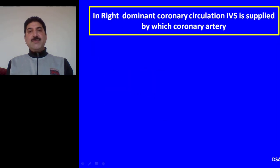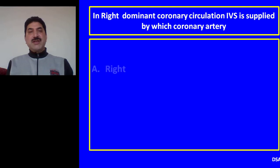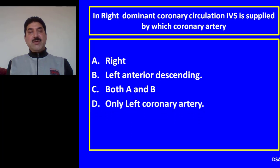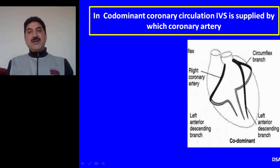Question 2: In right dominant coronary circulation, the interventricular septum is supplied by which coronary artery? Options: Right; left anterior descending; both A and B; only left coronary artery. C — both A and B — is the correct option. As shown in this figure, the interventricular septum is supplied both by perforating branches of the left anterior descending artery and the dominant coronary artery.